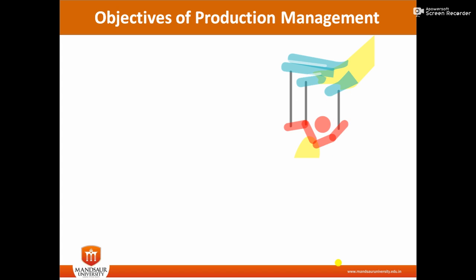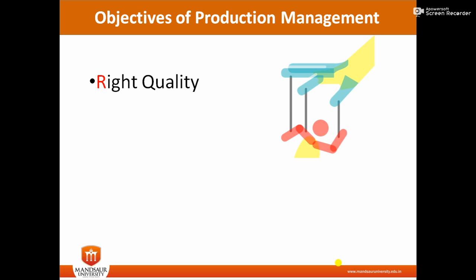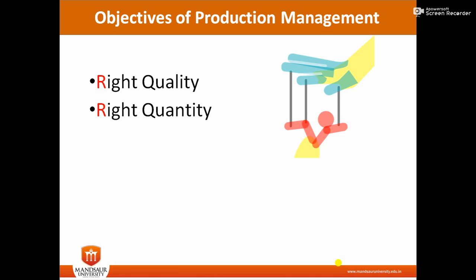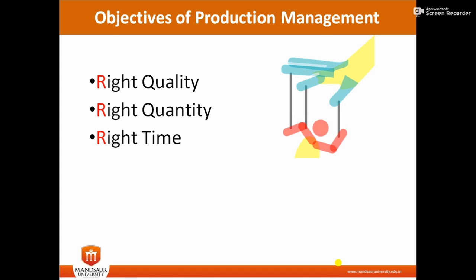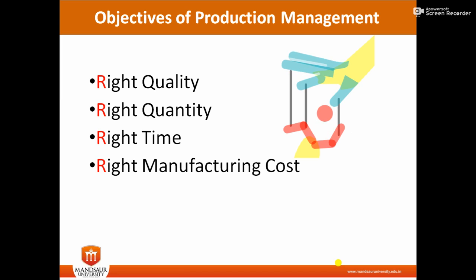Now we need to understand the objectives of production management — why it is required. The first objective is right quality: whenever an industry produces goods, the quality should be correct and assured. The second is right quantity: it should not be too much or too less as per requirements. Third is right time: whenever goods are demanded, we should be ready with them. The last objective is right manufacturing cost: the cost should match what was planned, with no variance.